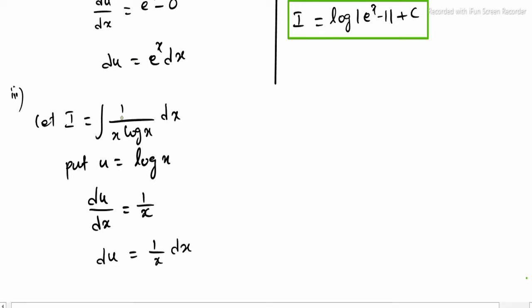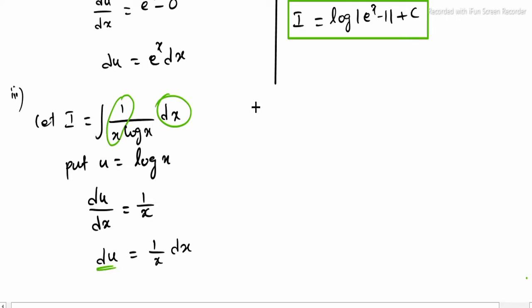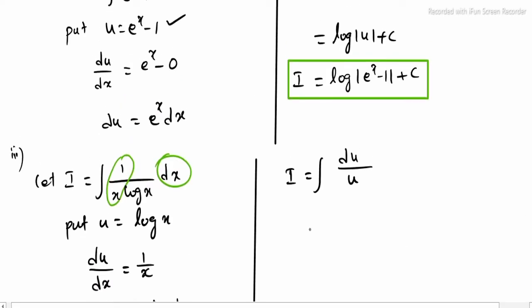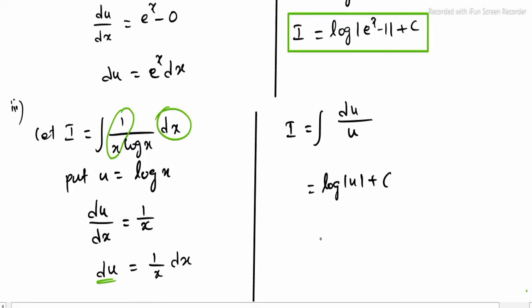Observing the integrand, (1/x) dx can be replaced by du. So i equals the integral of du divided by u (where u = log x). This gives log|u| + c. Replacing u with log x: log|log x| + c. This is the Sub-question 3 integrate value.